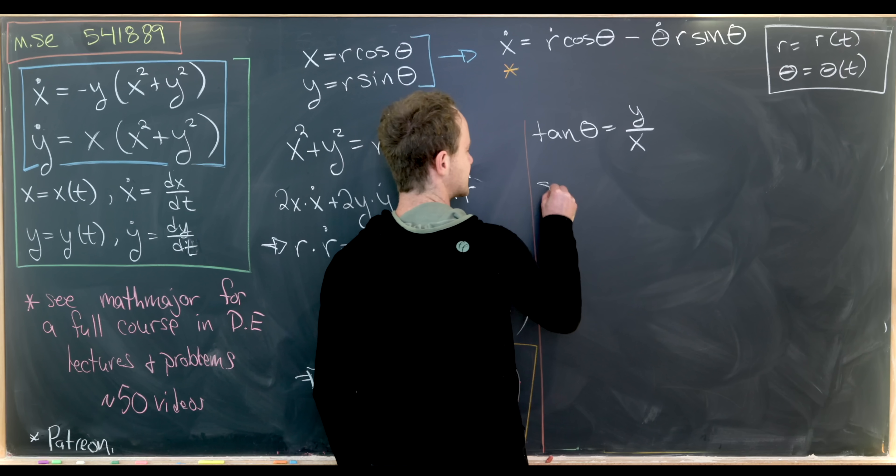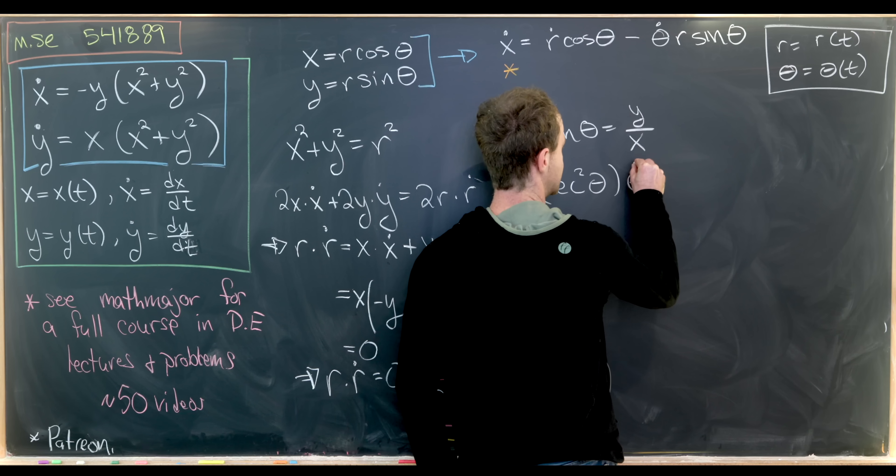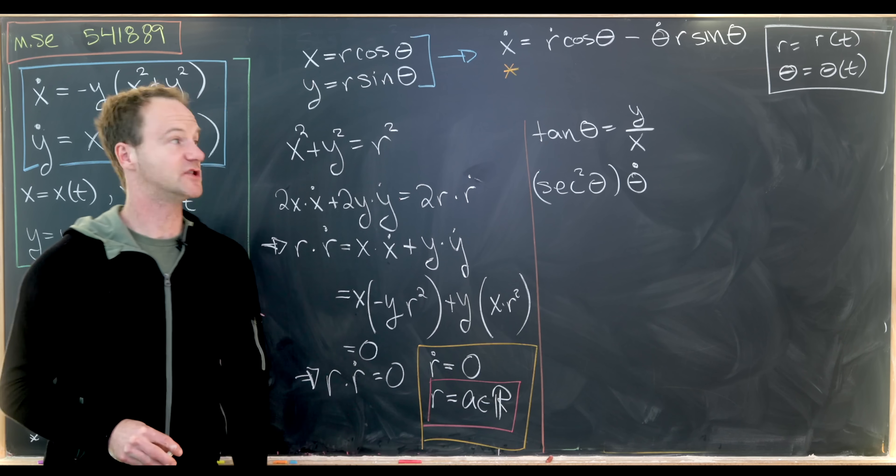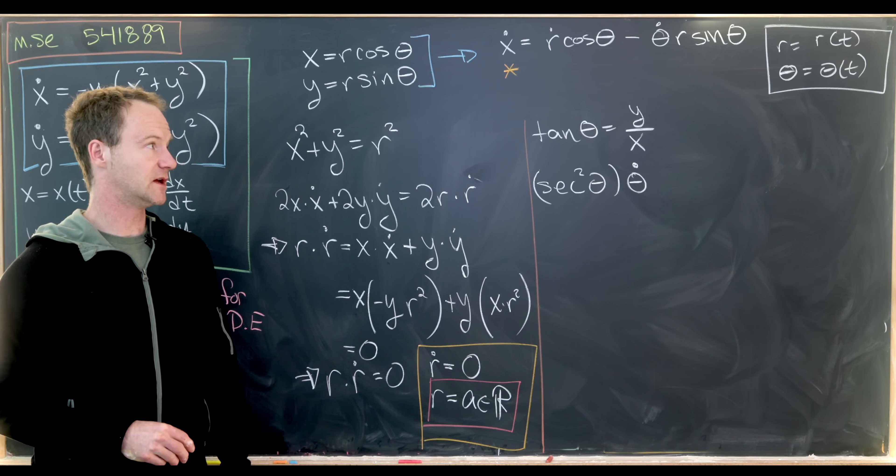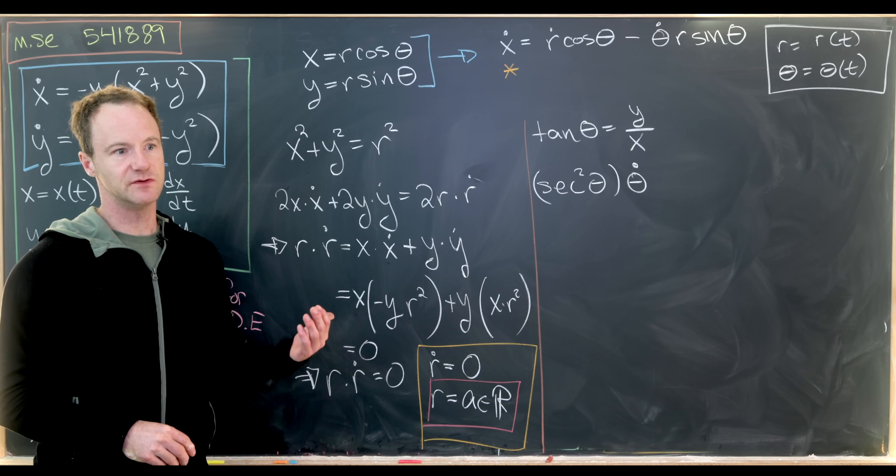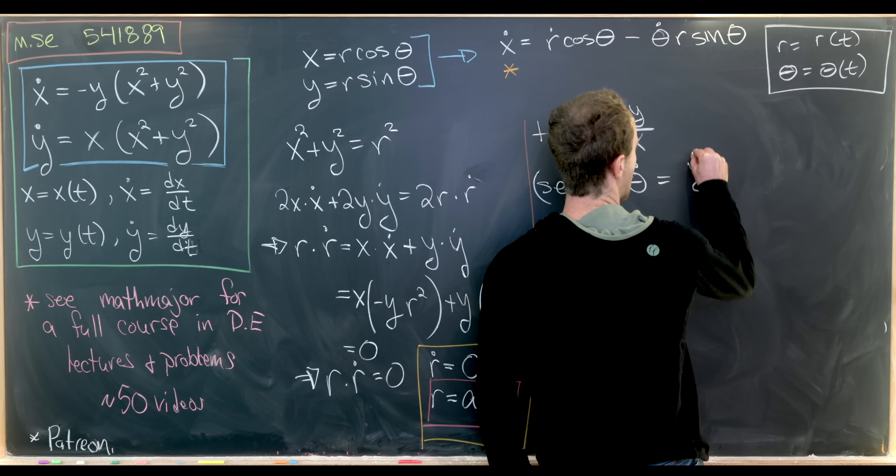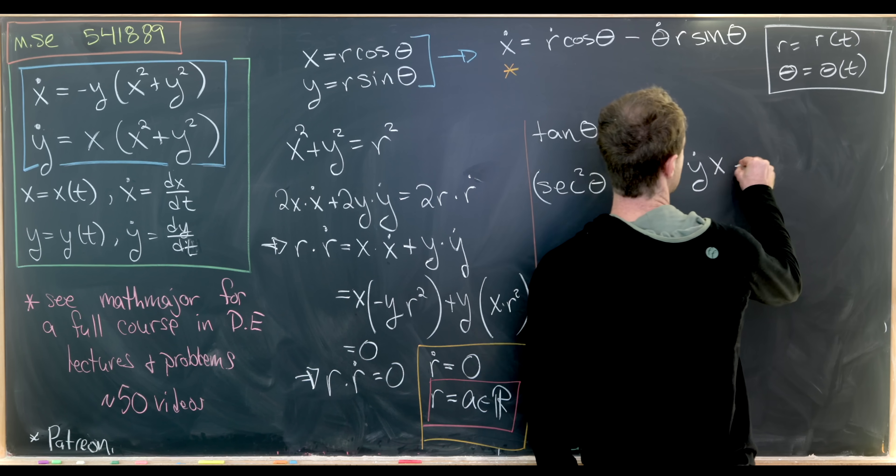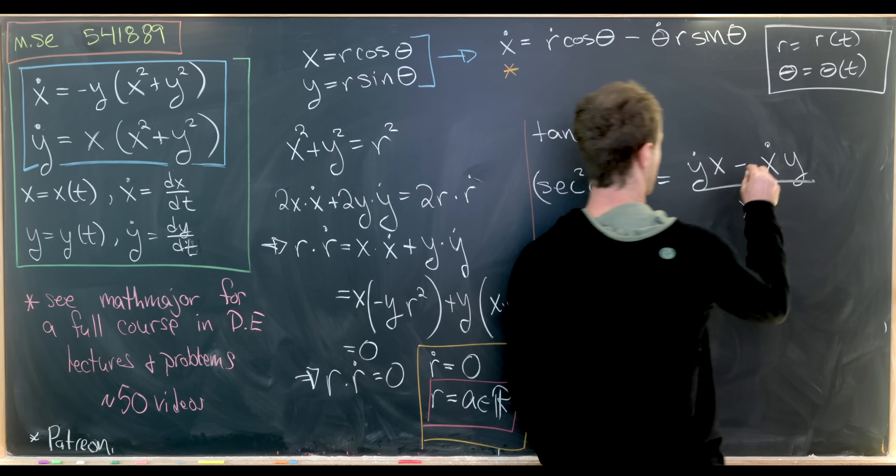So the left-hand side will give us secant squared of θ times θ dot. So that's using the chain rule. And now over there on the right-hand side, we'd probably like to use something like the quotient rule.